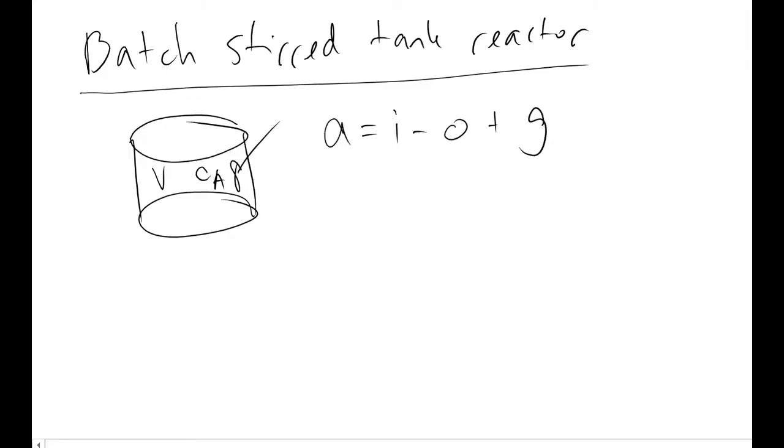You will not write a steady state mole balance on a BSTR because it will be pretty boring. BSTRs have concentrations that change over time. And because of that, we write our accumulation term dNA/dt, and that must be equal to, we have no flow in, we have no flow out, but we do have a reaction occurring, and therefore we'll have some term rA times V.